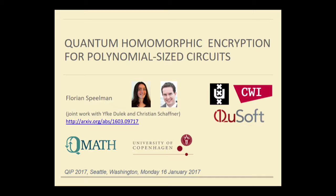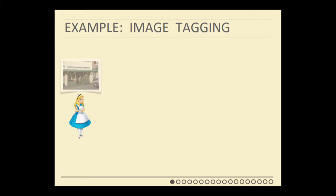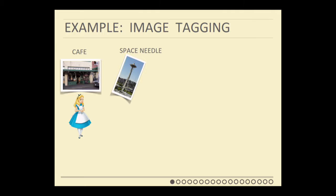What is homomorphic encryption? We will have the same protagonist we often have, namely Alice. Alice is on holidays, and on her holidays she sees many interesting things. For example, she takes a photo of a coffee shop — this is the original Starbucks — and she takes a photo of some other interesting landmark. When she gets home, she might want to categorize these photos, so she might want to tag them: for the first photo, 'cafe', and for the second, 'space needle'.